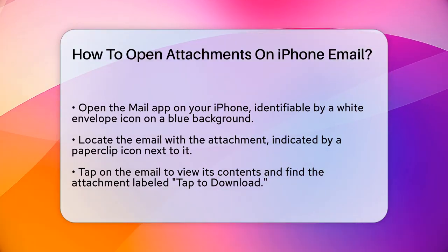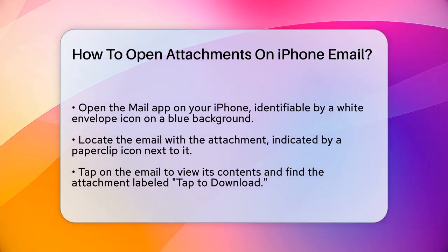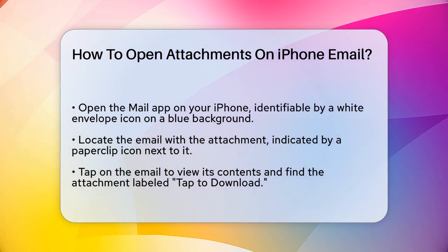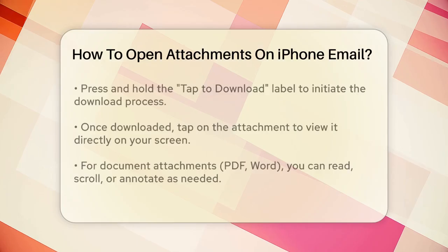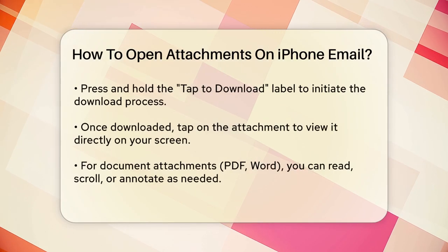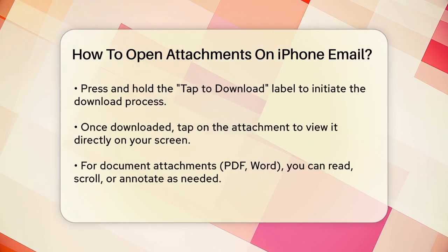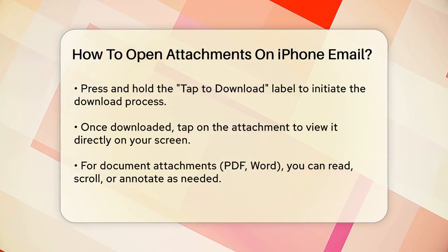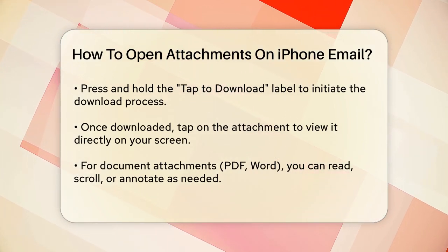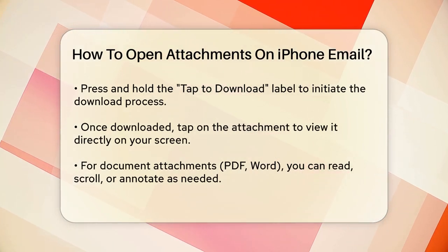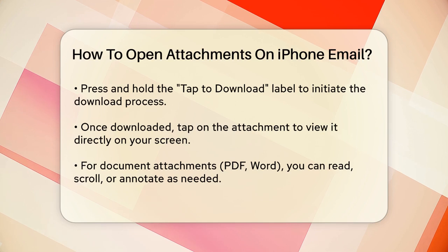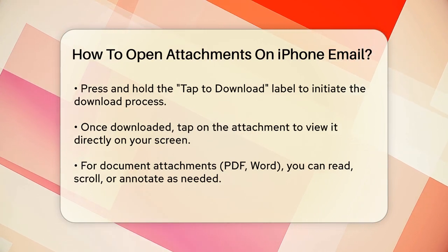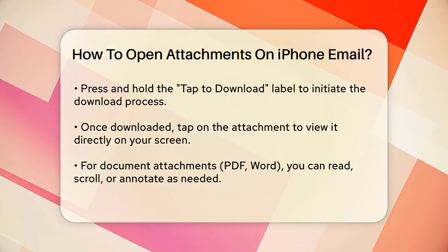Tap on the email to open it, and then look for the attachment. It will be displayed within the email message itself, often with a label like 'Tap to download.' To download and open the attachment, simply tap and hold on the 'Tap to download' label. This will start the download process, and once it's complete, you can tap on the attachment to open it.